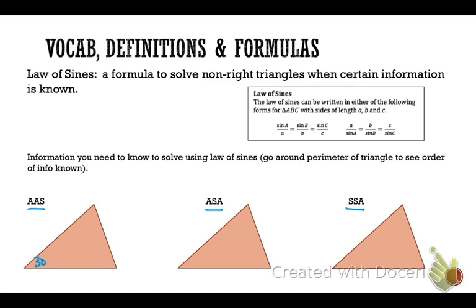For example, angle-angle-side would look something like this — consecutively, that's what we would know, and we have enough information to use the law of sines to solve the triangle and find all the remaining angles and sides. This would be angle-side-angle, looking consecutively at what we know. And then this would be side-side-angle.